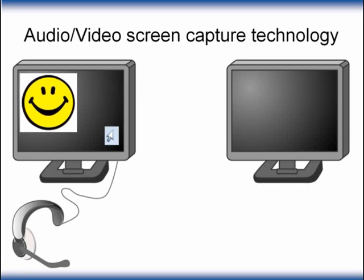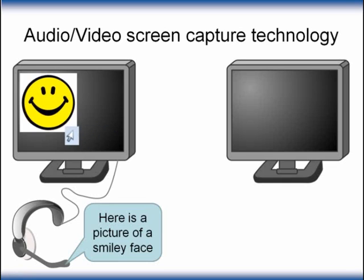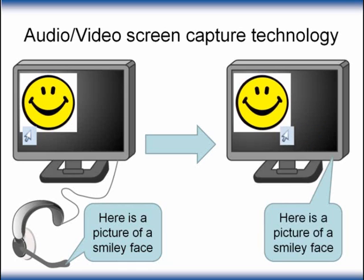For example, we could capture the action of pointing a mouse at the picture on your computer screen and saying, here is a picture of a smiley face. We can capture that as a file and send it to another person. They can play back the file and see and hear what was recorded, here is a picture of a smiley face on their own computer.